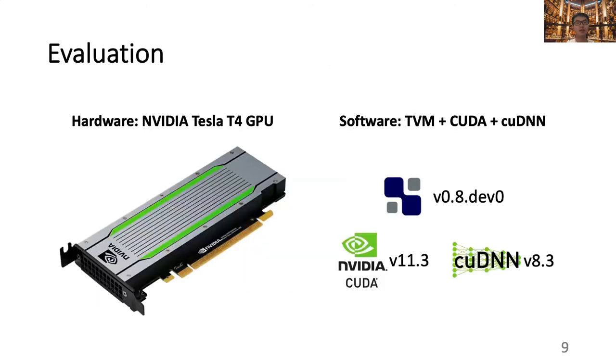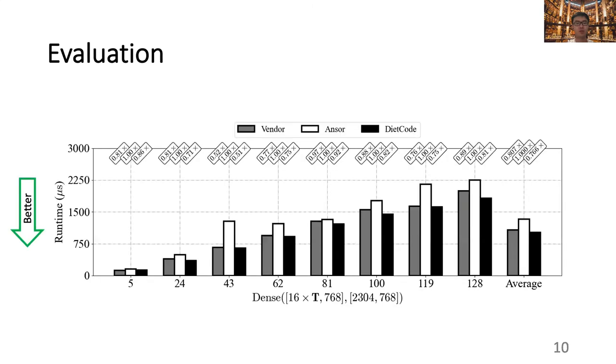To test the effectiveness of DietCode, we evaluate our hardware platform equipped with a NVIDIA Tesla T4 GPU, with CUDA 11.3, and cuDNN 8.3. We use DietCode to auto-schedule the dense layers extracted from the BERT model, which is a state-of-the-art language model application. The sequence length that we use is uniformly sampled within the range from 1 to 128.